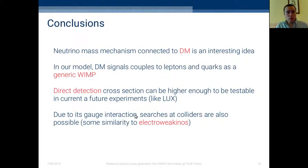To the end of the talk, the conclusion is that this neutrino mass mechanism connected with dark matter is a very interesting idea. In this model, the dark matter couples to leptons, quarks, and W and Z bosons like in a generic WIMP scenario. This is very nice because usually models with dark matter and neutrinos have annihilation signals going mostly to leptons in the case of fermion dark matter. The direct detection cross-sections are high enough to be testable in current and future experiments like LUX or XENON1T. Because of its gauge interaction that the dark matter might have, it could also be possible to search at colliders because there are similarities to electroweak-inos.